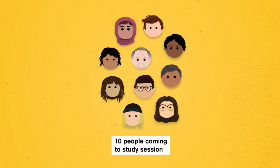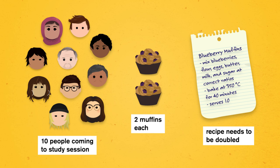Ten people are coming to the study session, and you want there to be two muffins per person. But your recipe only makes a batch of ten. You need to double it to end up with the right amount of muffins at the end.